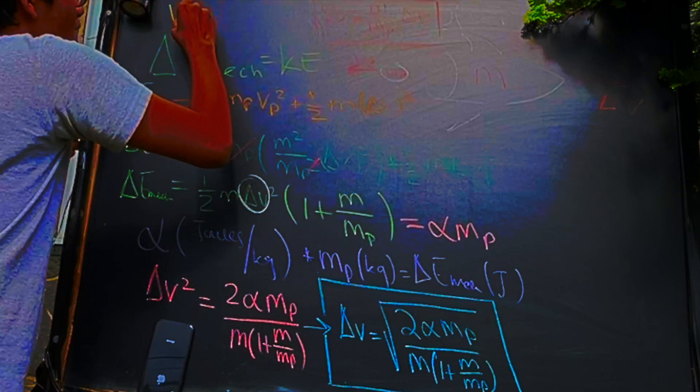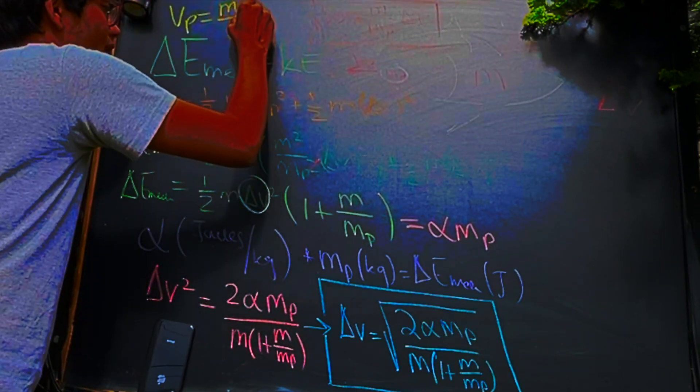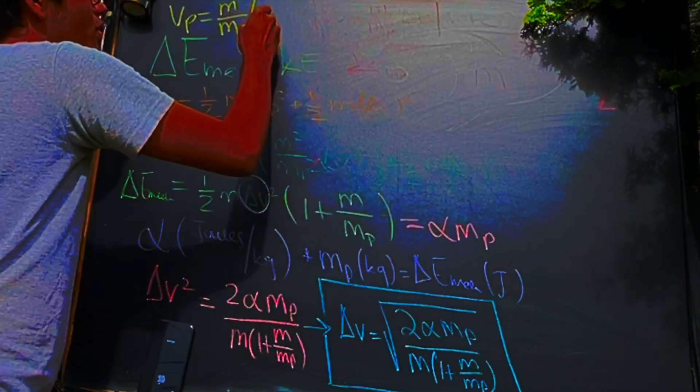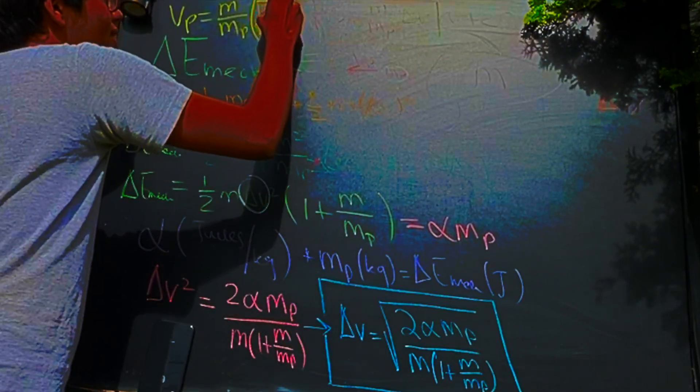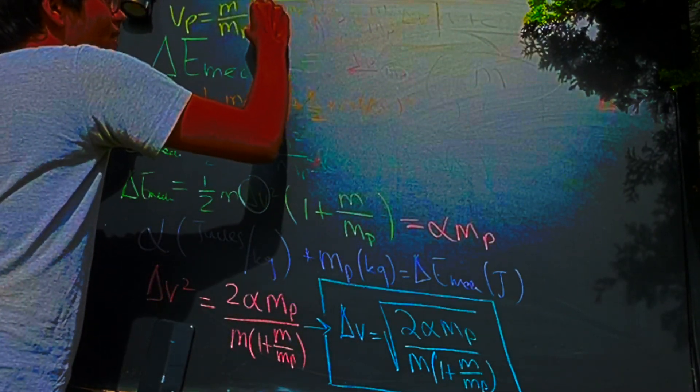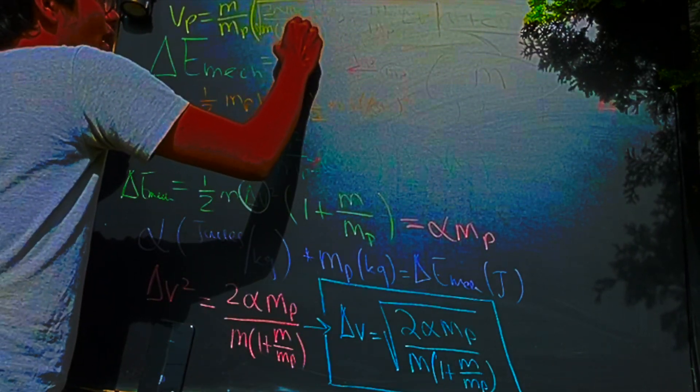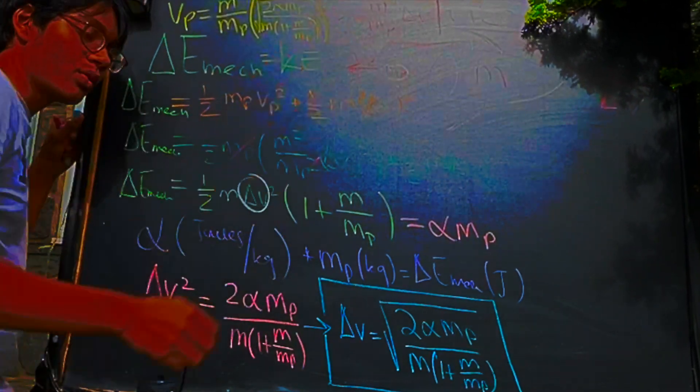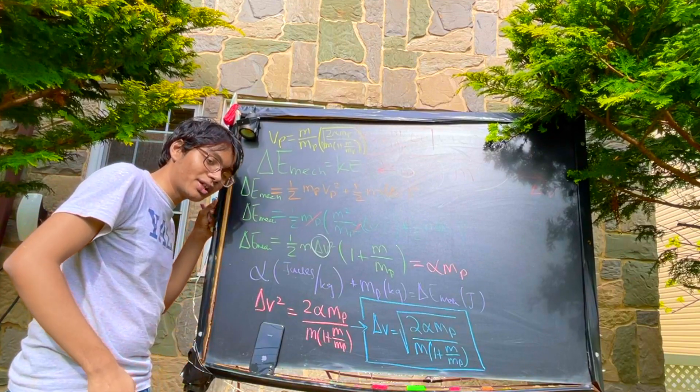And so we can say the velocity of our propellant is going to be the ratio of the mass of the rocket to the mass of the propellant times delta V. And of course, we know what delta V is. It's the root of 2 alpha times the mass of the propellant divided by the mass of the propellant times 1 plus m over mp. And that, ladies and gentlemen, is the end of Rocket Science 101. Thanks for watching this lecture. If you have any questions or comments, leave them below. We'll check you out next time.